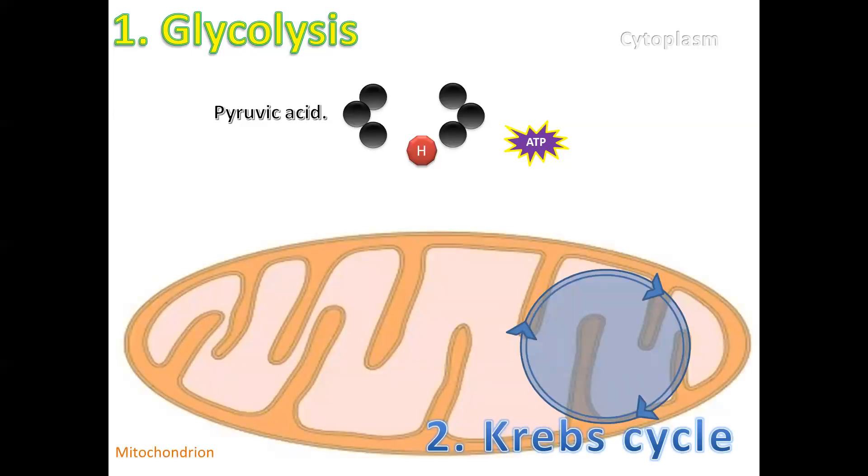The next phase, known as the Krebs cycle, occurs within the mitochondria. We have the pyruvic acid entering the Krebs cycle, and in the Krebs cycle we also have high energy hydrogen being formed and we have carbon dioxide gas as a waste product being formed.